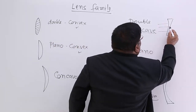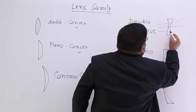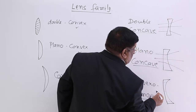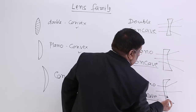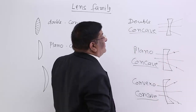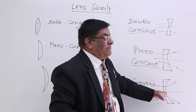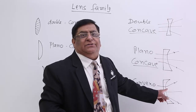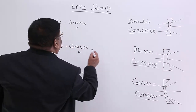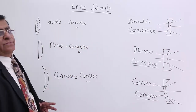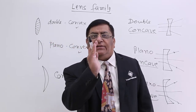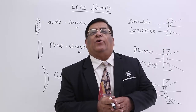All three concave lenses are diverging — parallel rays coming in will be diverged. The amount of divergence may vary, but all will diverge. Therefore all are concave. So we have the concave family and the convex family. To summarize: a transparent medium which has at least one side curved is called a lens.